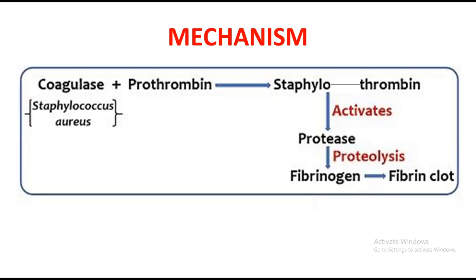The activated thrombin then acts as a protease. It converts fibrinogen present in the serum into fibrin. Fibrin has the ability to clot with other fibrin molecules. If we have many fibrin molecules in the serum, they can clot together and form a clotting factor — essentially a clot.